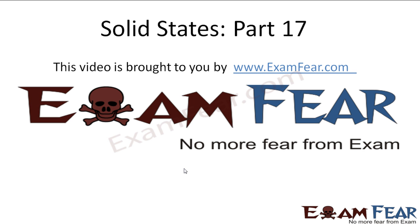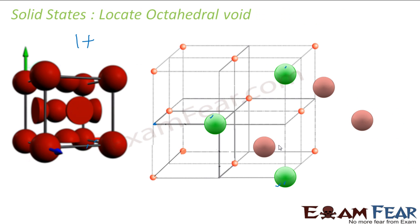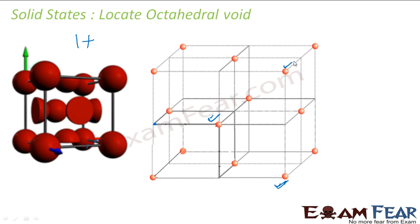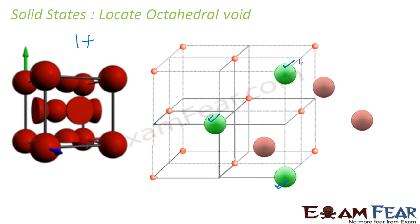Hello friends, this video on solid states part 17 is brought to you by examfear.com. I have one, two, three figures from the same unit, and one from a different unit shown in pink just to show the difference. There will be one more lattice here, one more cell here, because this cell is one small cell of a lattice, and a lattice has millions of these cells — one on the left, one on the right, one here, and one on the top.